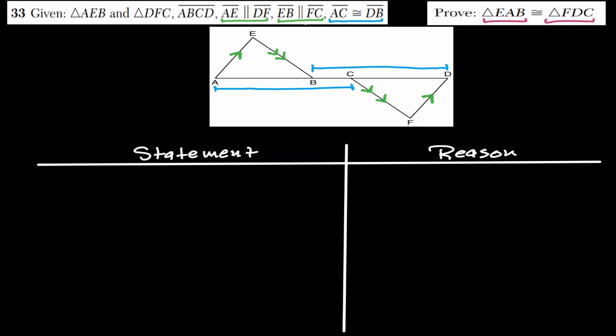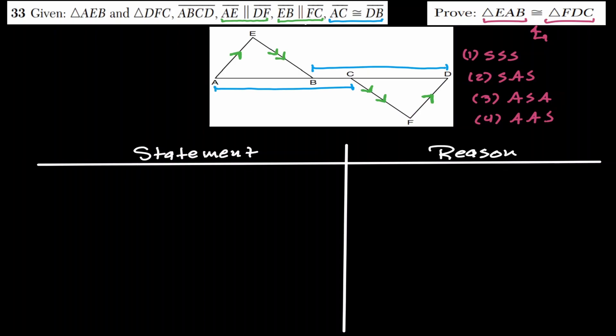Let's set up a statement and reason table. Our strategy is to use one of the triangle congruency theorems — SSS, SAS, ASA, or AAS. We'll look at the triangles and try to find congruent sides and congruent angles. Any proof table should always start with the givens.